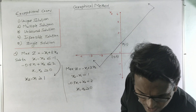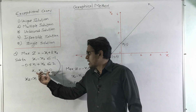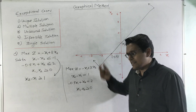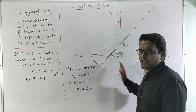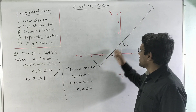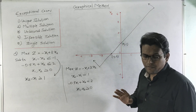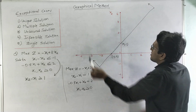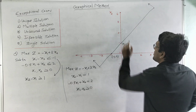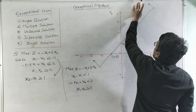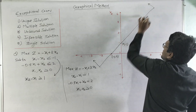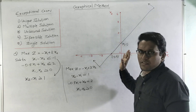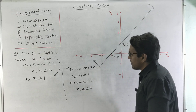One thing to note: our question specifies the non-negativity restriction x1, x2 greater than or equal to 0, but I have drawn the negative axis. This is just for the sake of drawing the constraint — the negative part has no contribution to our objective function. Our feasible region for the first constraint goes upward toward infinity in the positive quadrant.